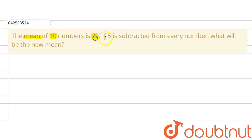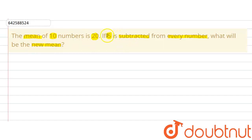We are given the mean of 10 numbers, and the question says if 5 is subtracted from every number, what will be the new mean?